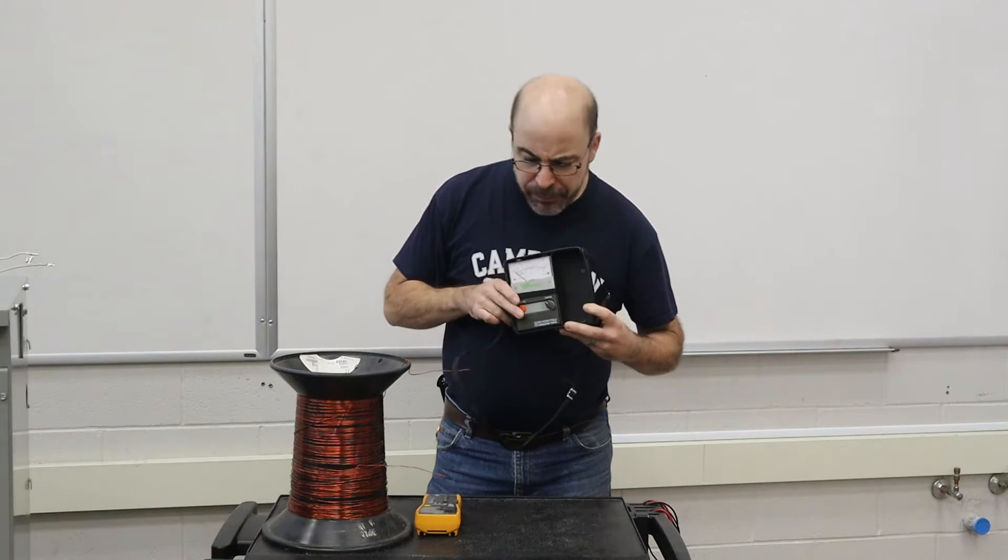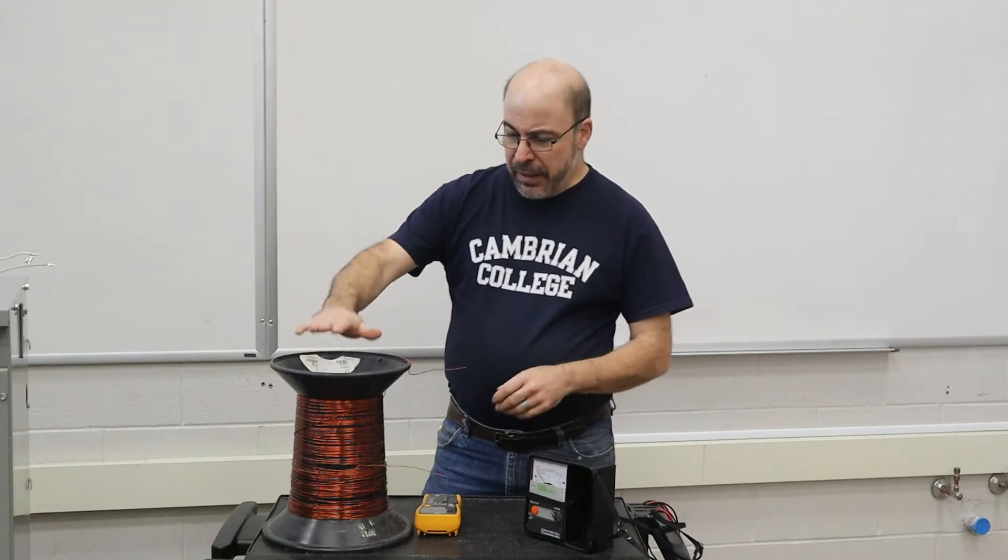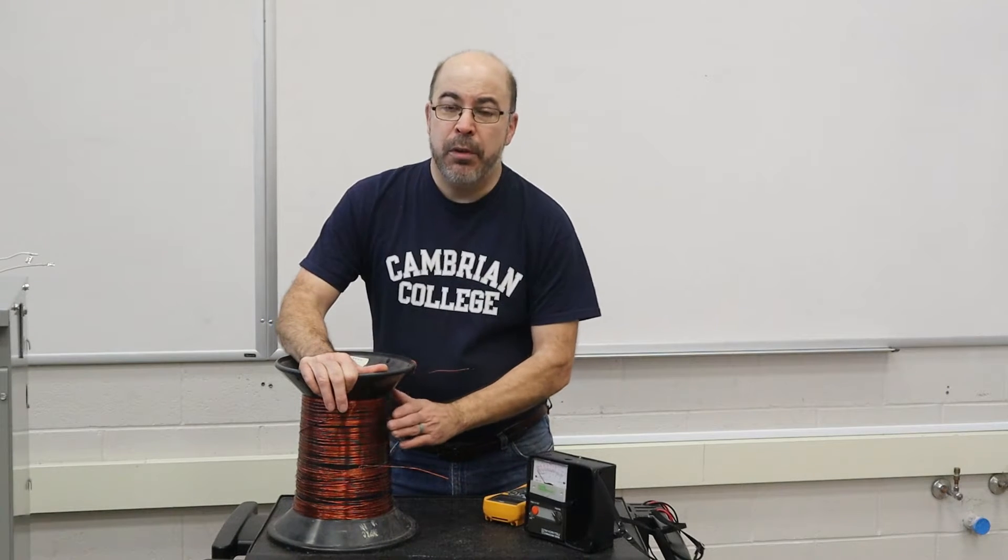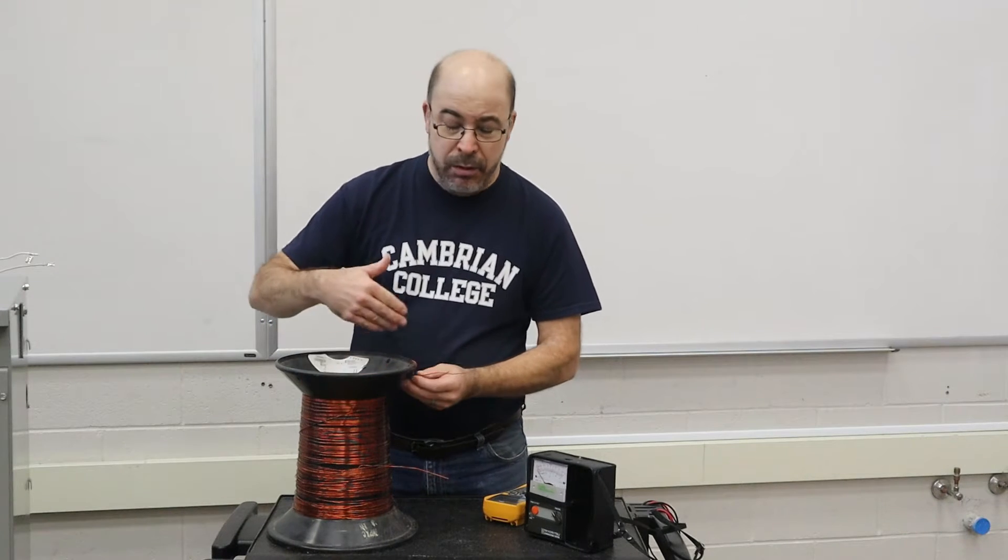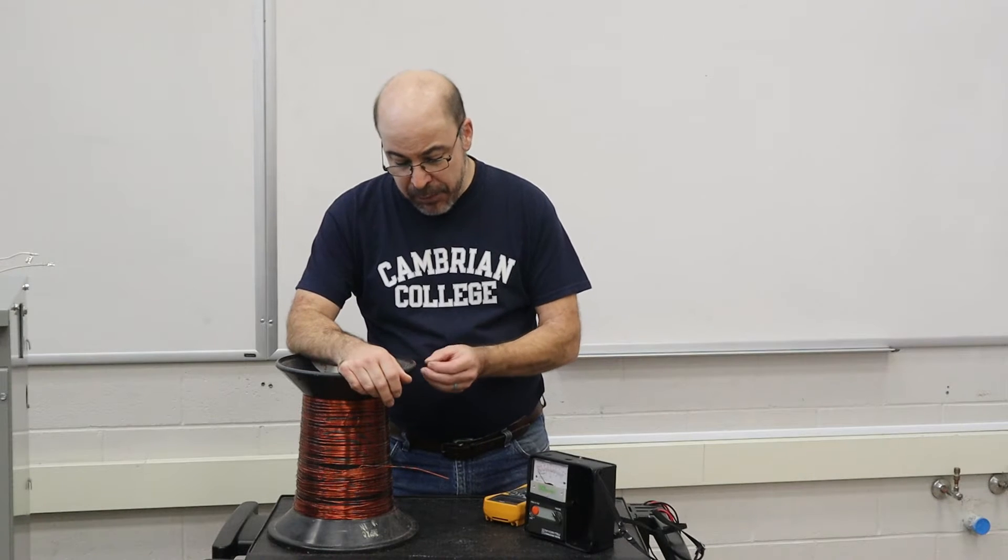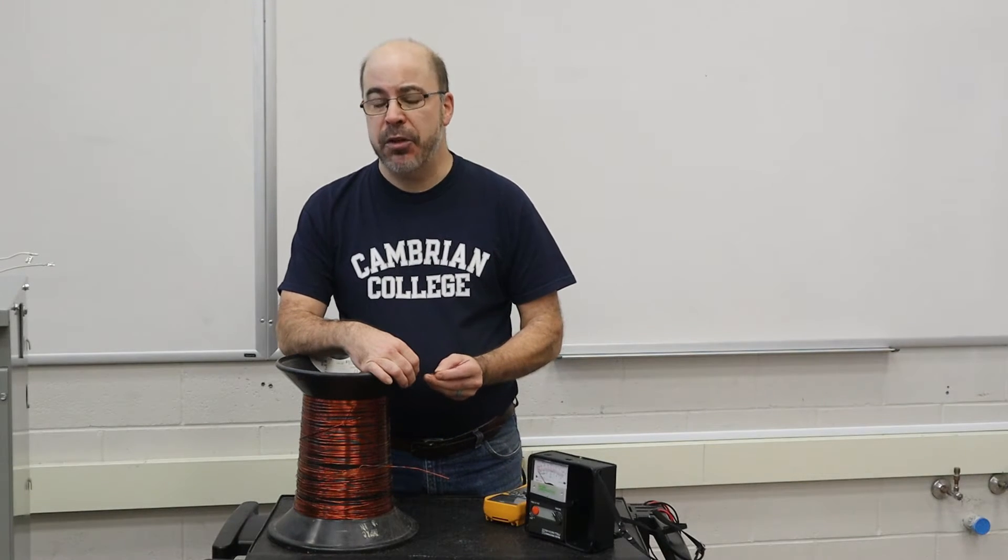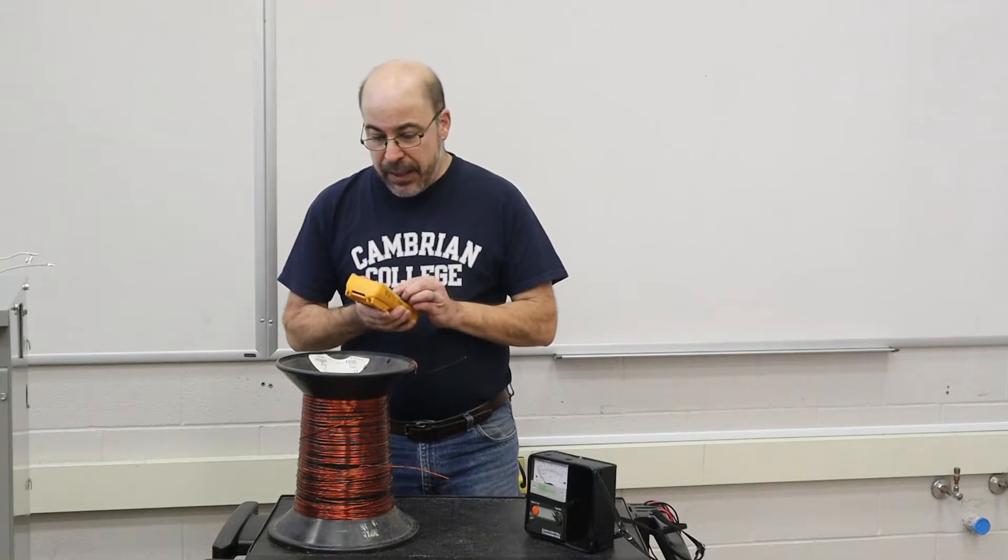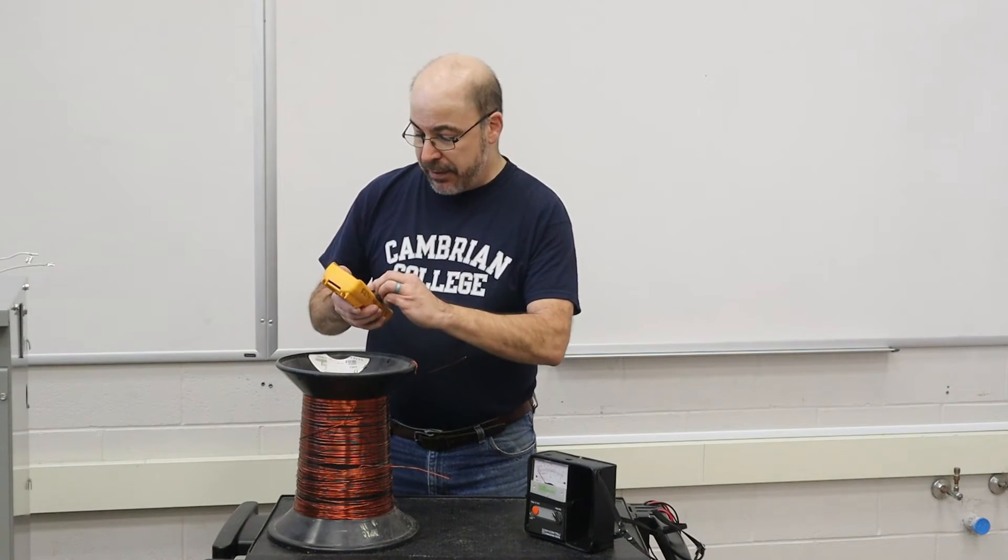Now you might be wondering what does he mean by testing the insulation? Here's an example. This is the typical wire that would be employed to create coils or the windings for both the primary or the secondary of a transformer. And it actually has a very small or thin coating or a film which we refer to as insulation. And in fact I'm going to set up my multimeter and I want to kind of put that to the test.